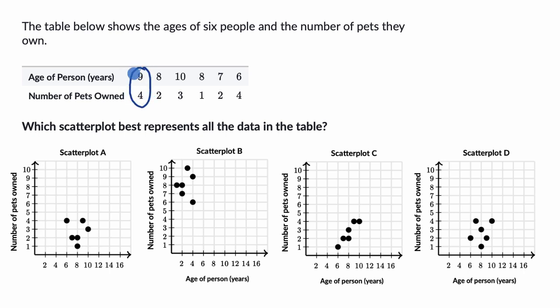So this first one is nine years old and four pets. So that is nine years old, which is right about here between eight and 10, and four pets. So I see it right over there. So scatter plot A is looking good. Nine years old and four pets should be here. It's not in scatter plot B. So we can rule scatter plot B out.